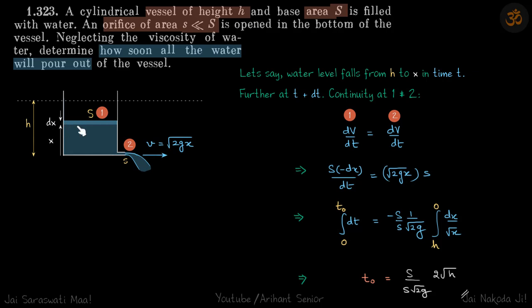So dV is S into dx. The dV of the water coming out, we know, is velocity into area, so velocity into small s. The velocity of efflux is root 2gx. Now we have added a minus sign here to make both sides positive.